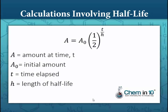A equals A-naught times one-half raised to the power of t divided by h. A is the amount of isotope remaining after a given time t. A-naught is the original amount of isotope present before it started to decay. t is equal to the time elapsed, and h is the half-life. In other words, the amount of radioactive isotope remaining is equal to the initial amount times one-half raised to the power of time elapsed divided by half-life.